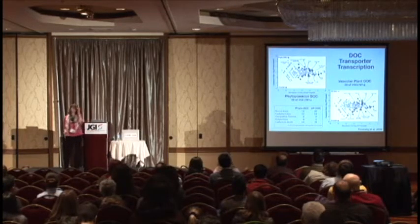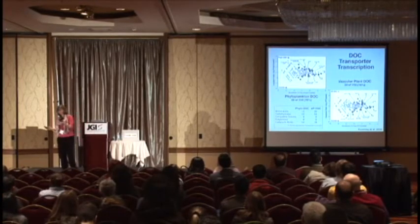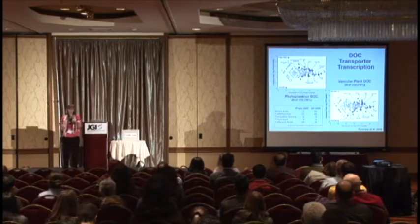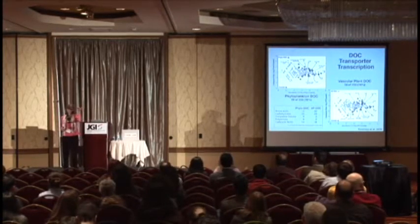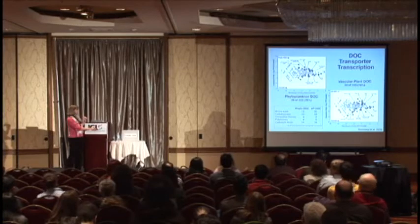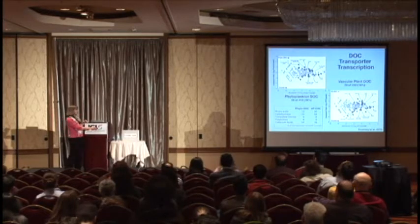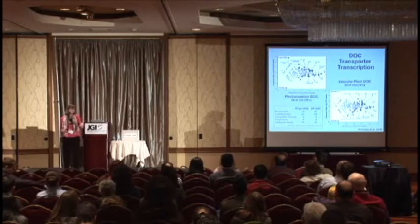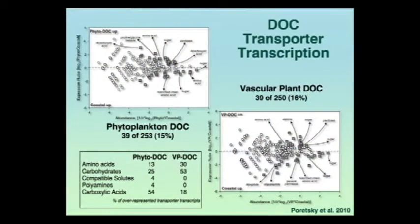For vascular plant DOC, the number came up to about 16%. Looking at the significantly changed categories that were overrepresented: phytoplankton-derived DOC had a big signal from carboxylic acids, which matches what we found in the natural community, plus amino acids, some carbohydrates, and other compounds expected from phytoplankton cytoplasm. Vascular plant-derived DOC looked quite different — the big signal was transporters for getting carbohydrates across the cell membrane, which is probably exactly what we would have expected.